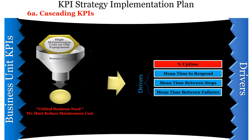For example, our main corporate objective is to reduce maintenance costs. Our site objective in response is to implement TPM Phase 2 by Q3 2017. A KPI that measures how well we are doing on this line is percent uptime — because if the machine is running, it isn't down, and if it isn't down, it isn't requiring costs to fix. A driver to percent uptime is mean time to respond, which is a leading indicator we have direct control over. The longer we take to respond and fix the issue, the lower the percent uptime.